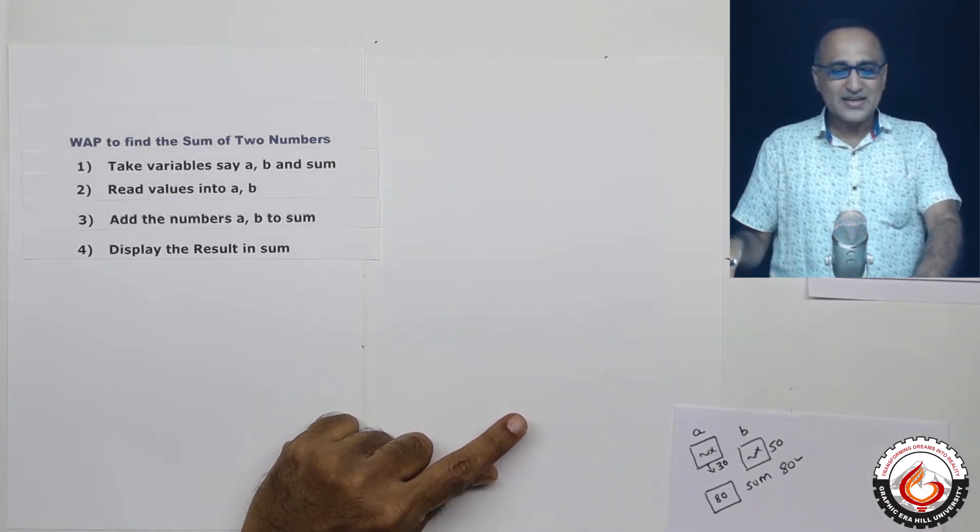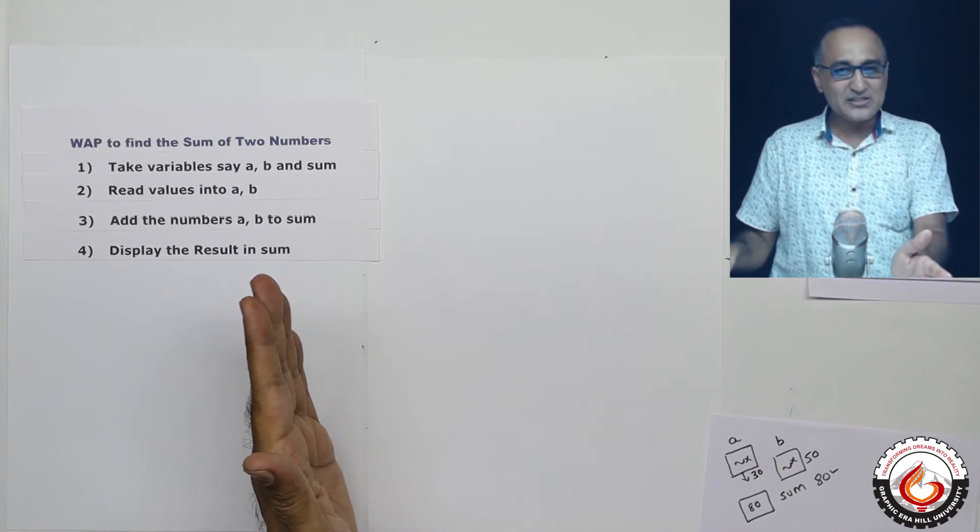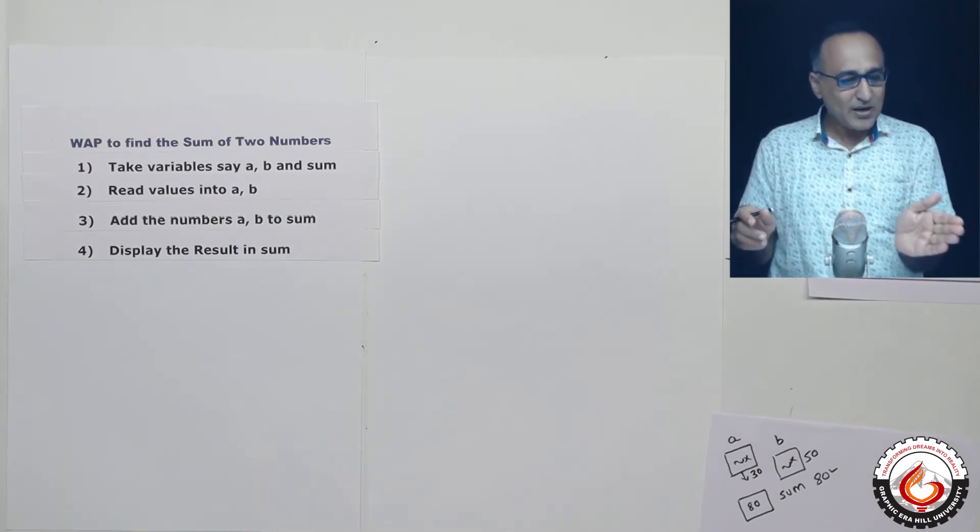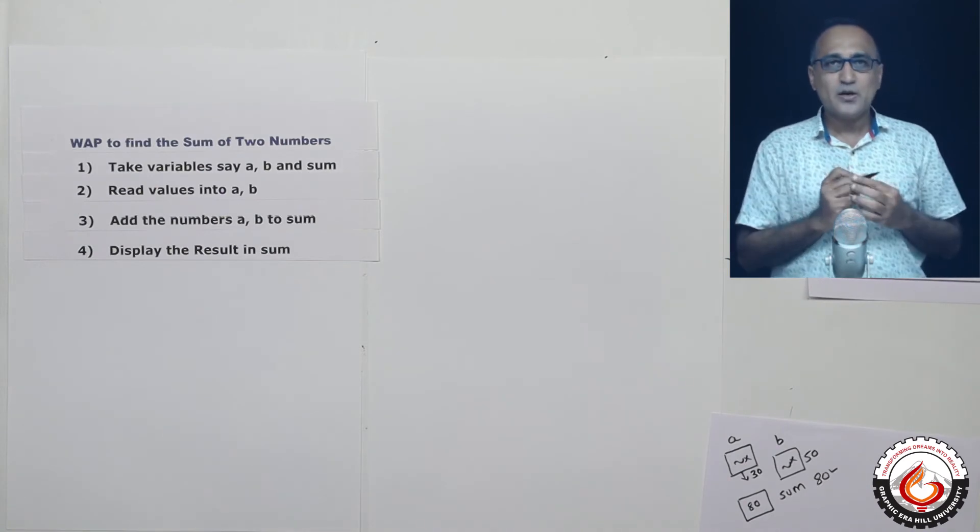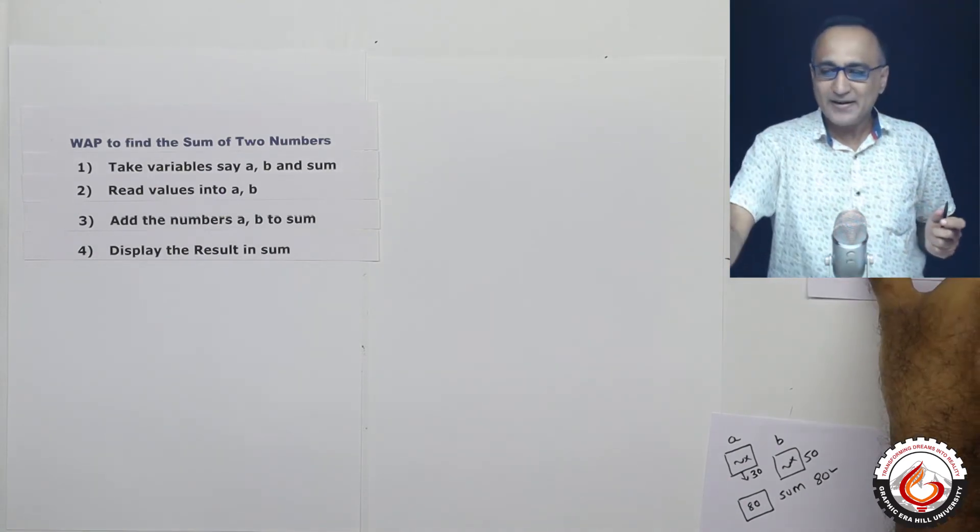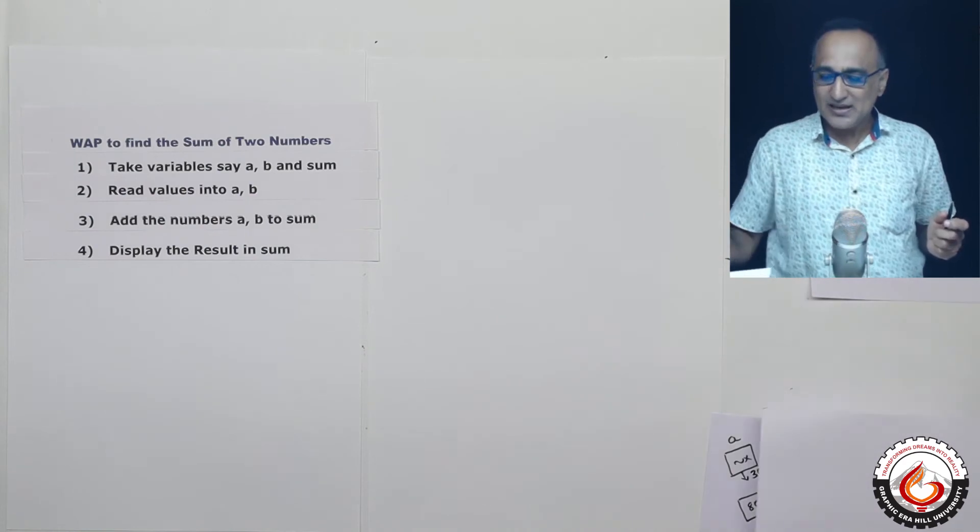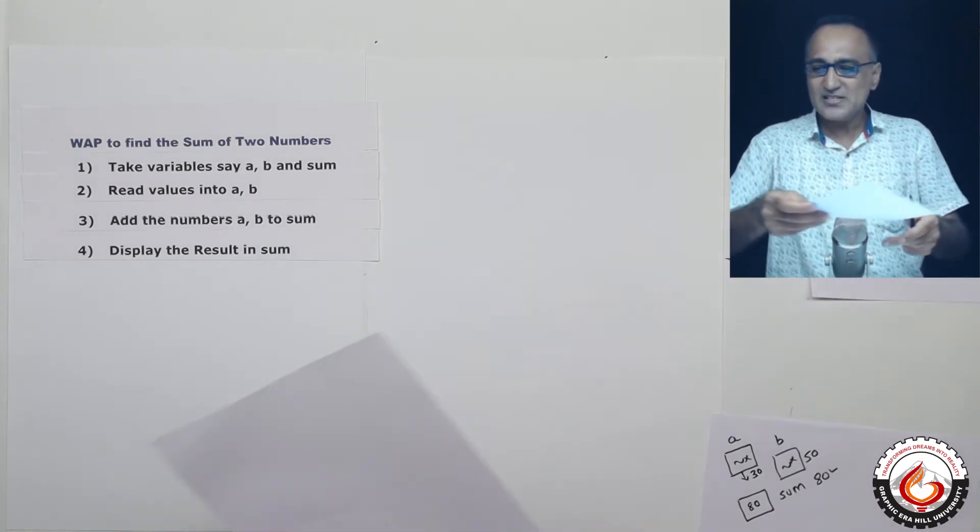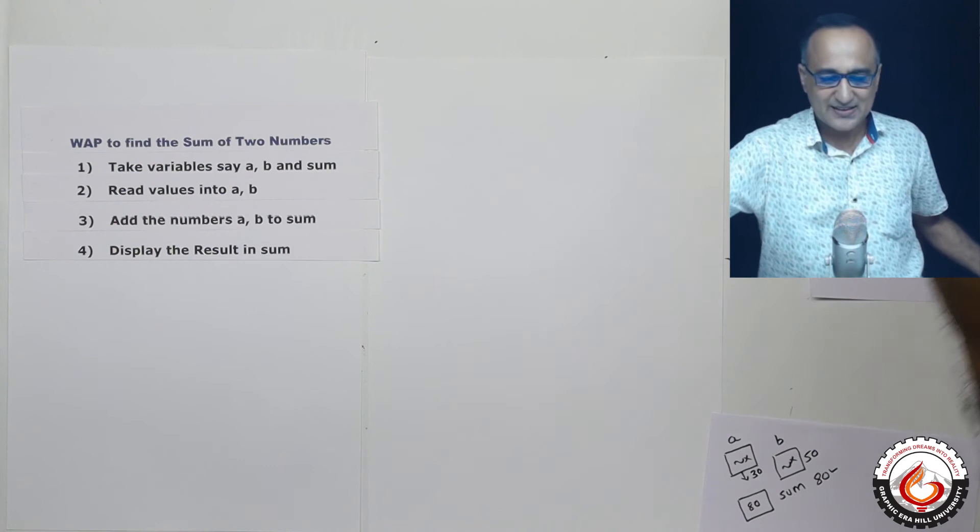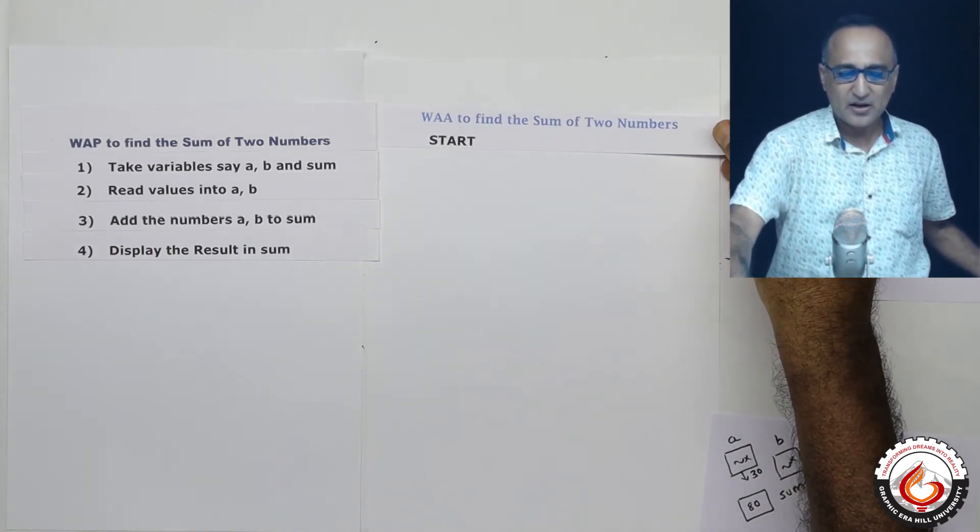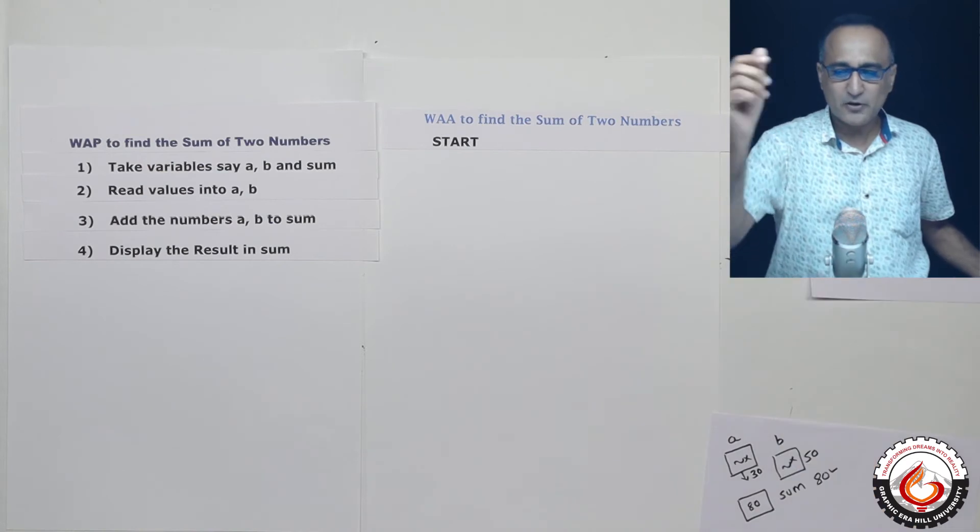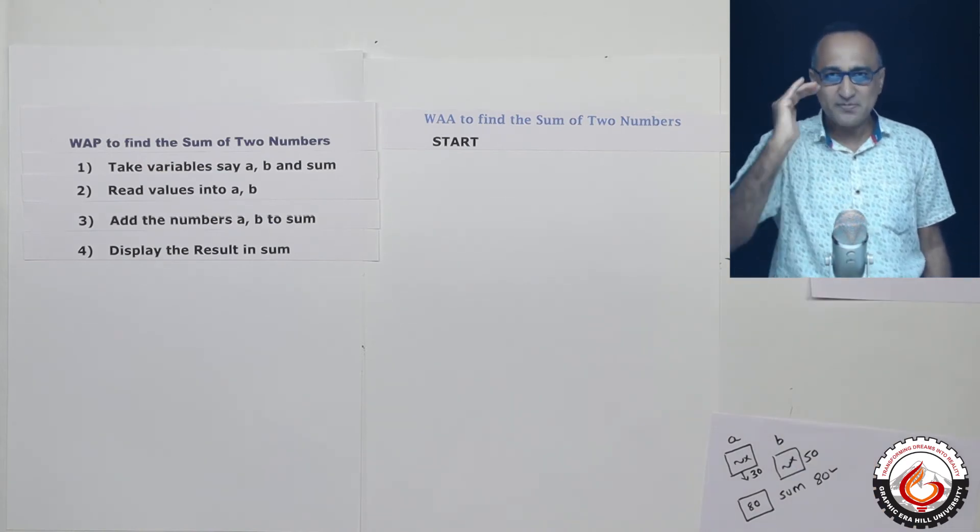Now what we will do is just side by side to this, we will take a look at how an algorithm also can be written for the same problem - that is how do you find the sum of two numbers using an algorithm. So the first step is I am going to start like this. I am going to say just see how it matches very closely. Write algorithm to find the sum of two numbers. The first step is start.